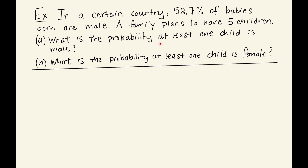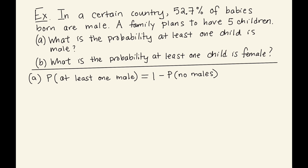We could use the addition rule, but that would take a lot of work — we'd need to calculate the probability of one male, add the probability of two males, three males, four males, five males, and so on. So we're going to use a shortcut: the event of getting at least one male is the complement of the event of getting zero males, so we can use the complement rule.